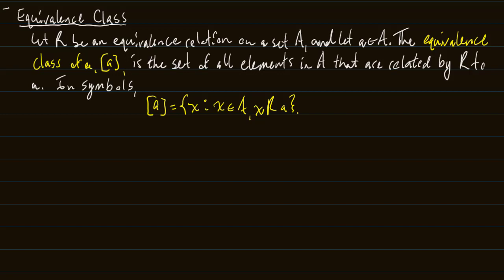These equivalence classes partition the integers when our equivalence relation is modulo arithmetic. We proved last time that addition modulo n is an equivalence relation. So let's look at this example: let's say our equivalence relation R is addition mod four. Let's do some examples and see what happens.